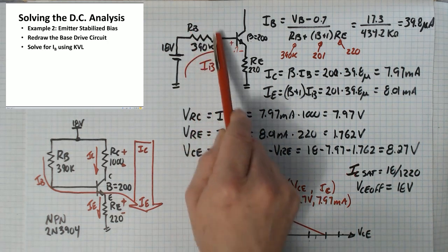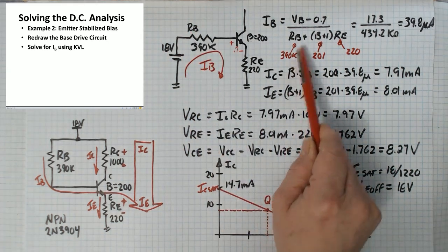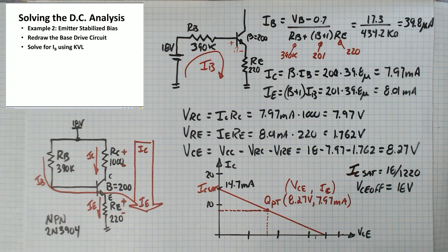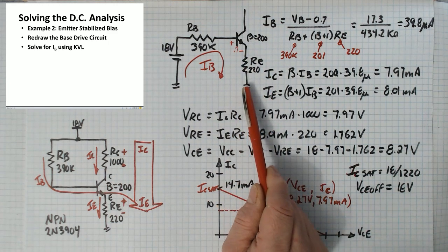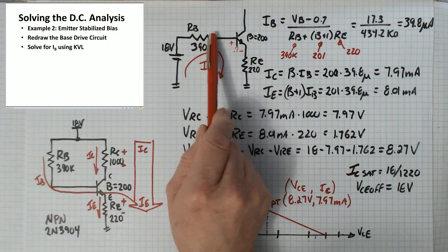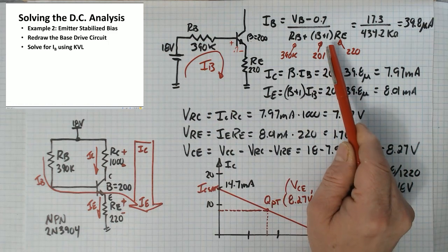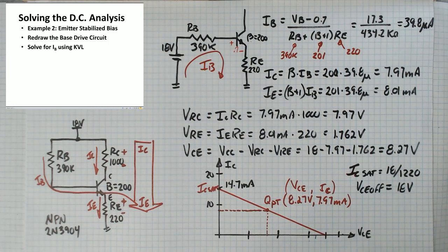This resistor we use directly as a 390k ohm resistor but this one we have to figure out the reflected impedance as it's looked at looking into the base. So we have to multiply it by 201 in order to get the proper value.